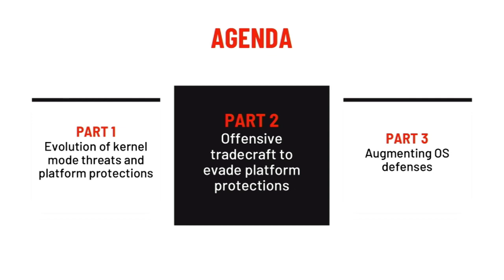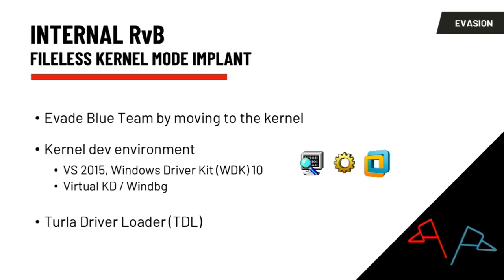Moving on to part two — our own offensive kernel mode tradecraft. Endgame periodically conducts internal red versus blue exercises to test our product and skills from both red and blue perspectives. Gabe and I are on the red team, tasked with emulating adversaries of varying sophistication. We want to emulate noisy commodity actors but also the most advanced APTs to gauge how well our blue team can detect them. In our last iteration, since our blue team was getting much better at detecting user-mode fileless techniques, we decided to up our game by looking at kernel mode techniques to try to evade detection.